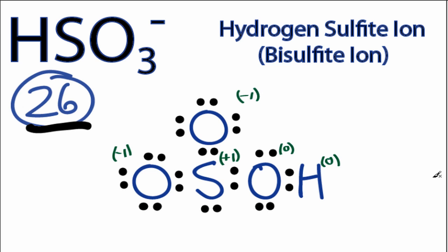When we calculate the formal charges, we see that the sulfur has a plus one, and then these oxygens each here have a minus one. We'd like our formal charges to be as close to zero as possible, so what we can do is take two valence electrons here and share them in the center to form a double bond.